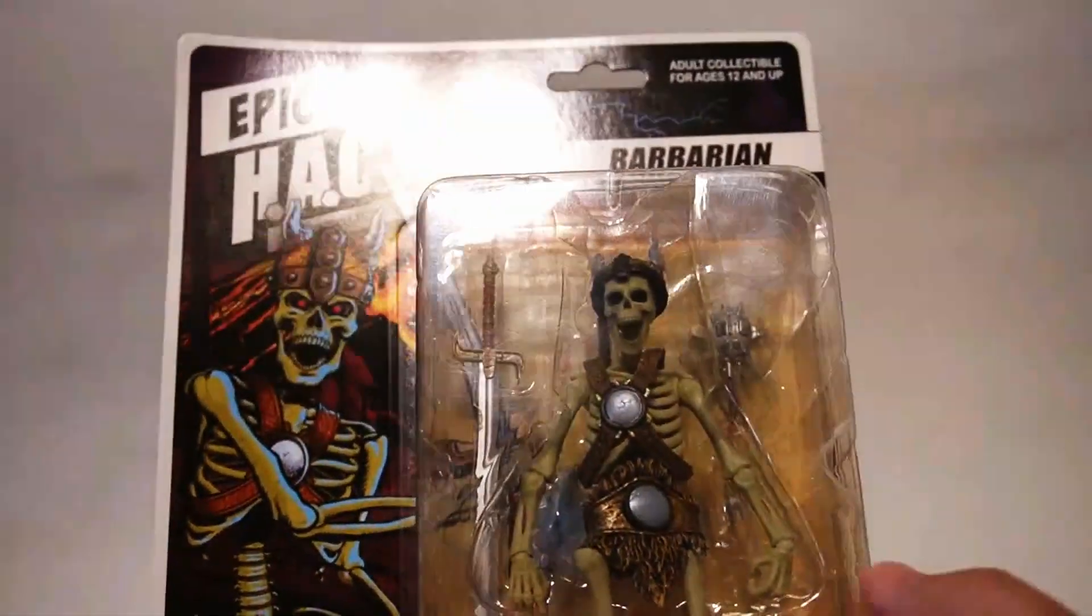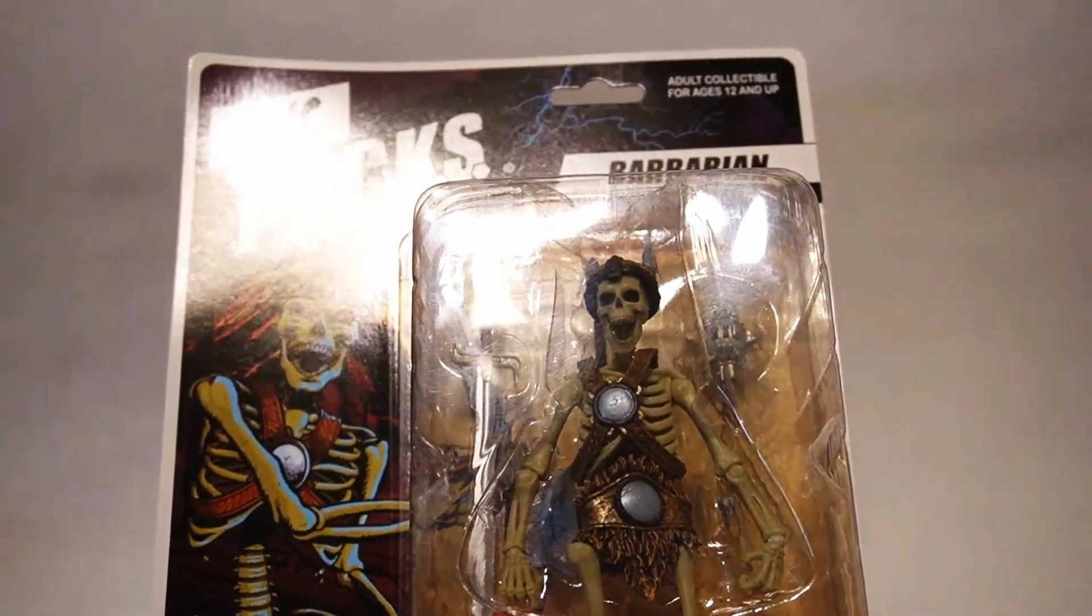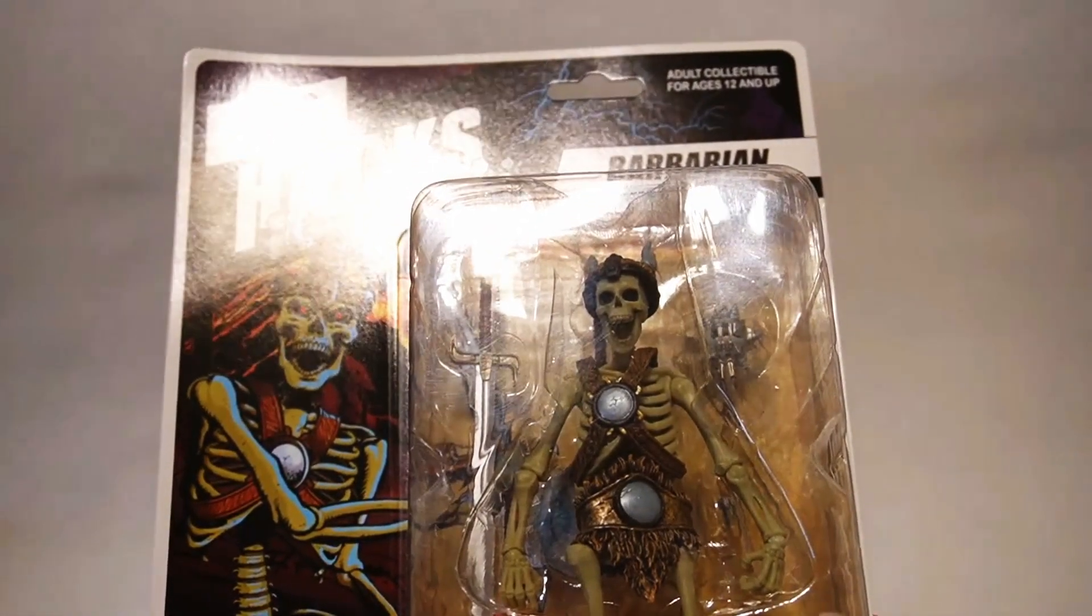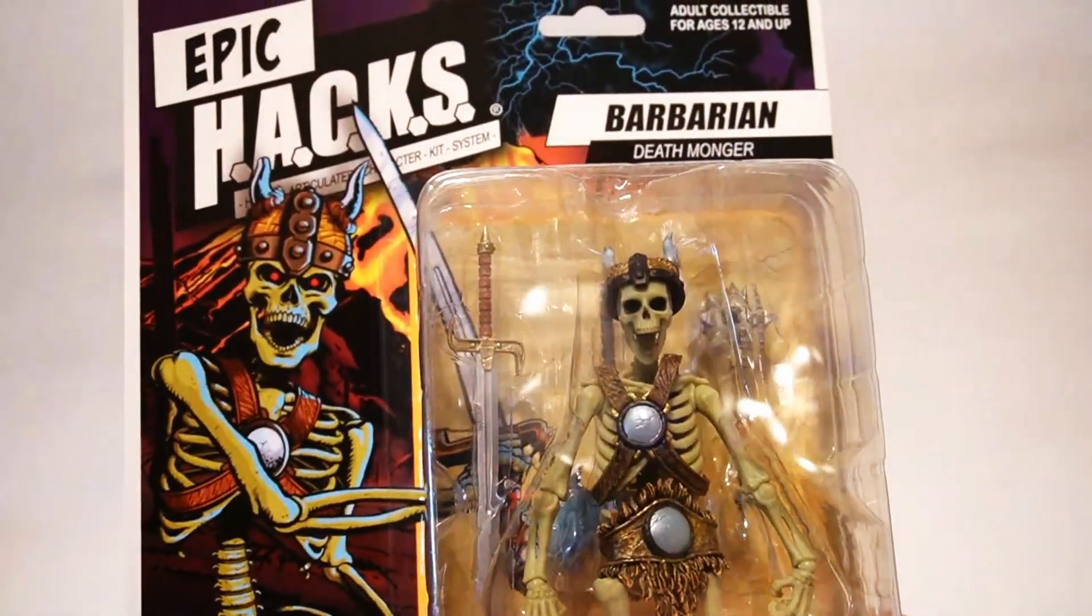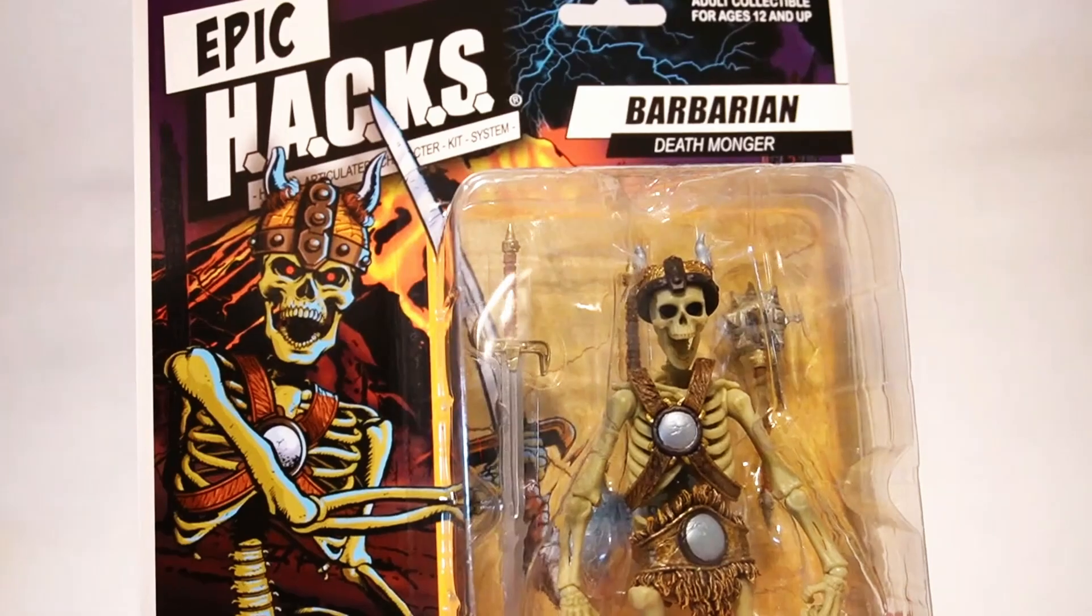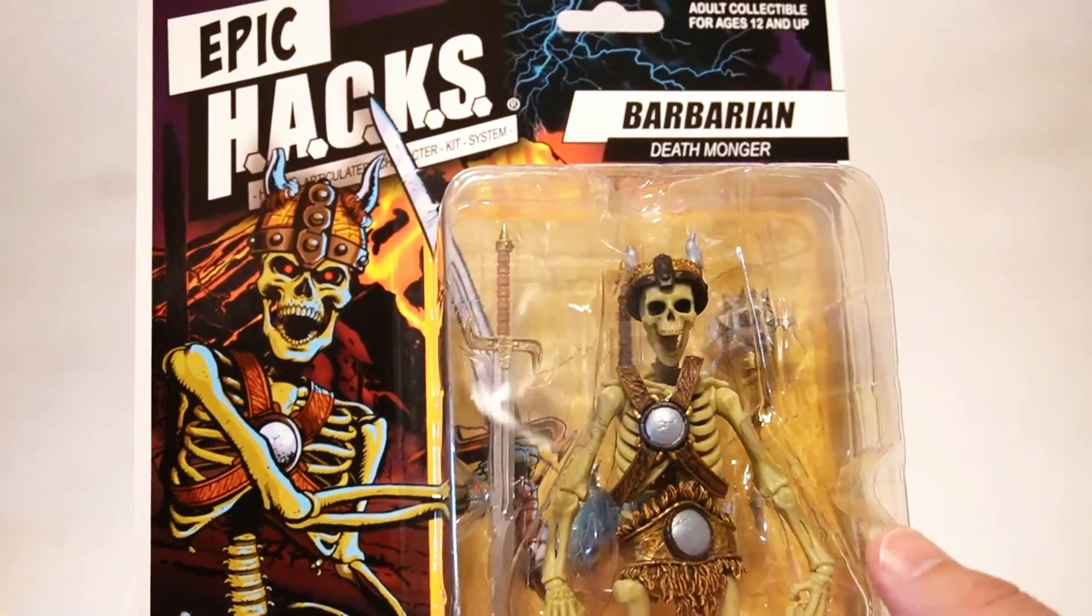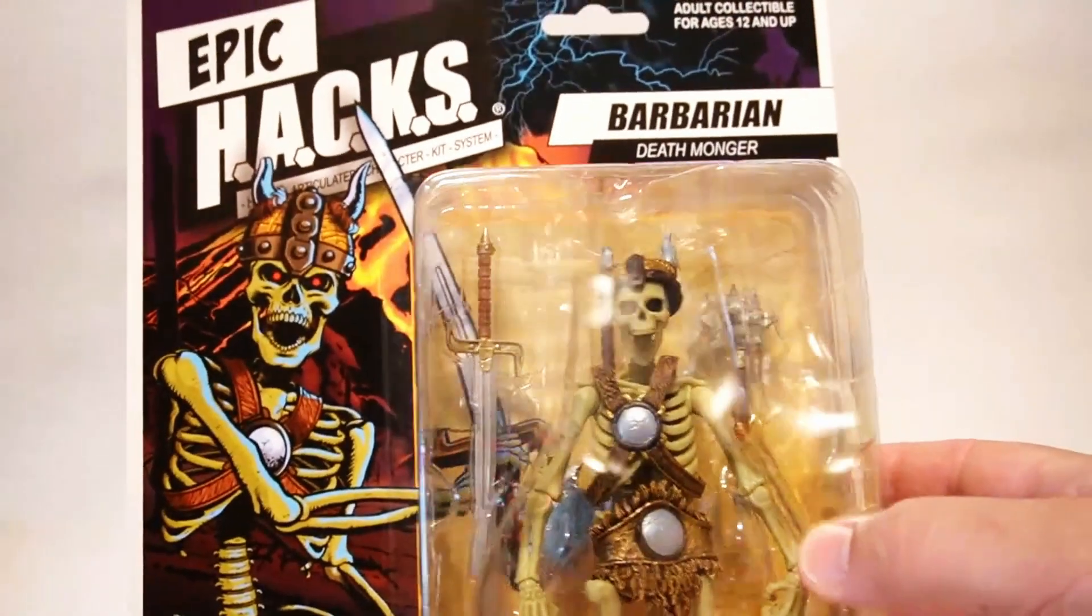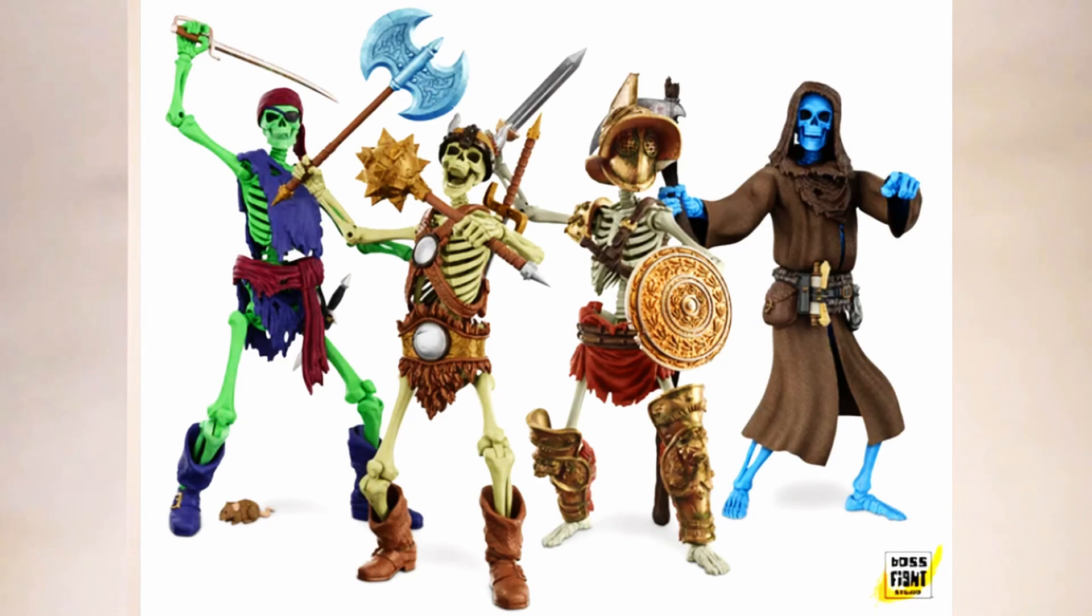This first wave is kind of unique. These are six inch action figures, which if you're familiar with any of the Boss Fight Hacks action figures, those normally come in a four inch style. So this is one of the first times they've released a six inch and this wave came out with this skeleton, which is the Barbarian and he also had a couple of friends that came out with him.